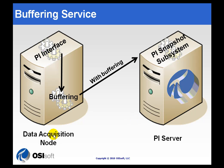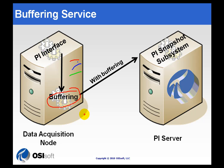The buffering you implement is going to work with all of the interfaces on the machine. Let's say you've got one, two, three different interfaces running. Each interface is going to be sending data to the PI Server, but this buffering application intercepts all of that — it's truly a go-between between the PI Server and any number of interfaces running on that machine.